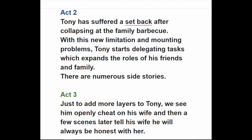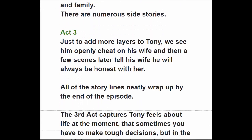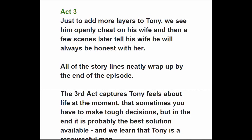Act Two: Tony suffers a setback after collapsing at the barbecue — his business takes a turn and his henchmen wonder if he can still run things. With his new limitation and mounting problems, Tony starts delegating tasks he might have handled himself, which expands the roles of his friends and family. Numerous side stories are also introduced. In Act Three, we see Tony openly cheat on his wife Carmela, and then a few scenes later tell her he will always be honest with her — revealing just how flawed this individual is.